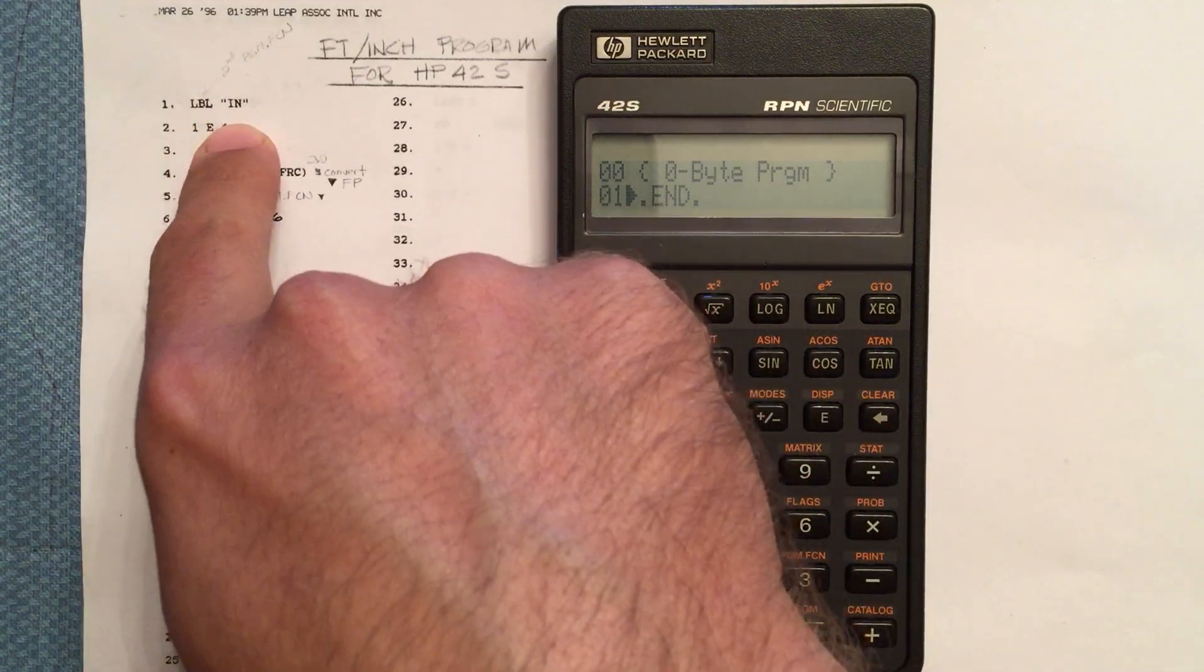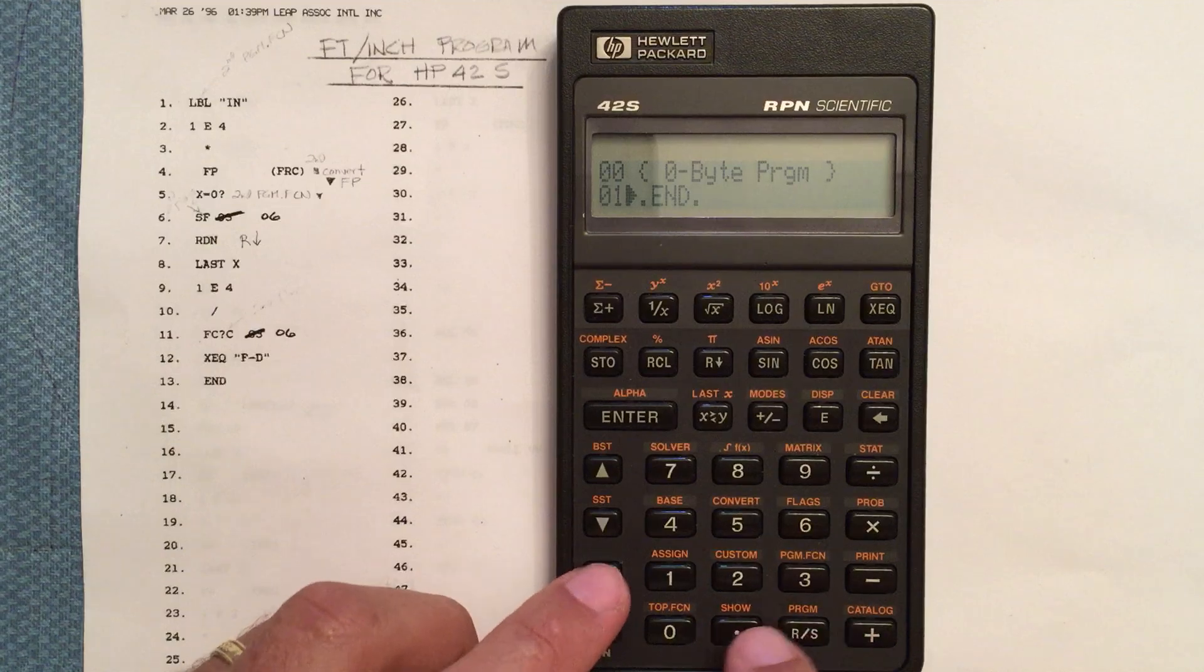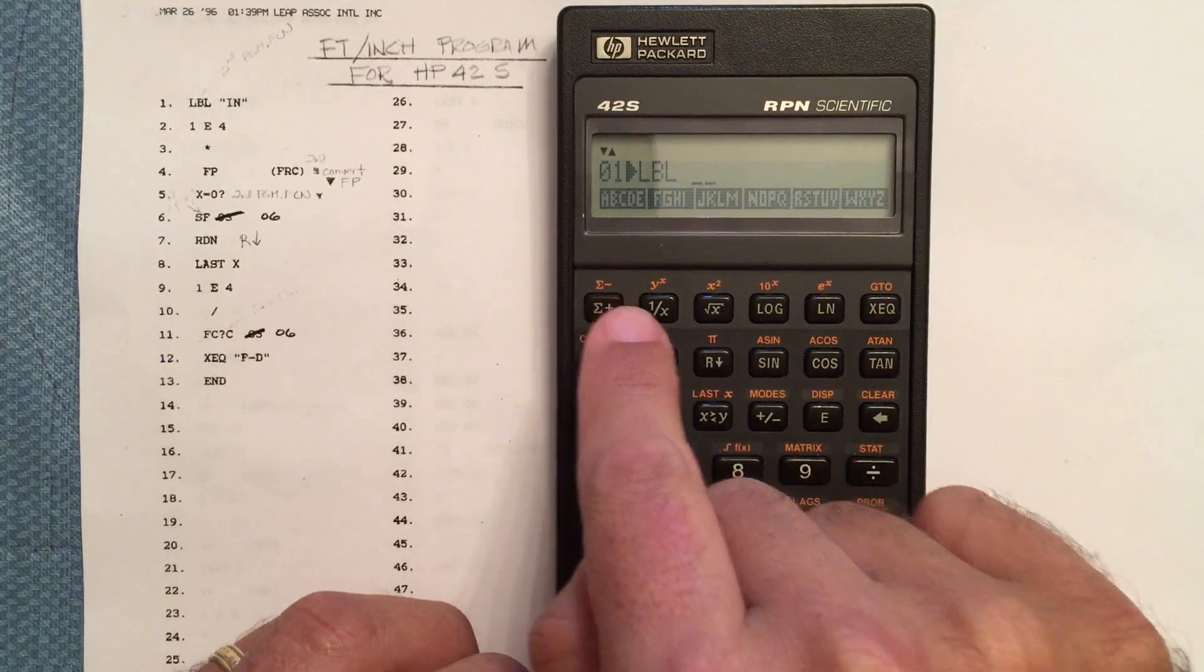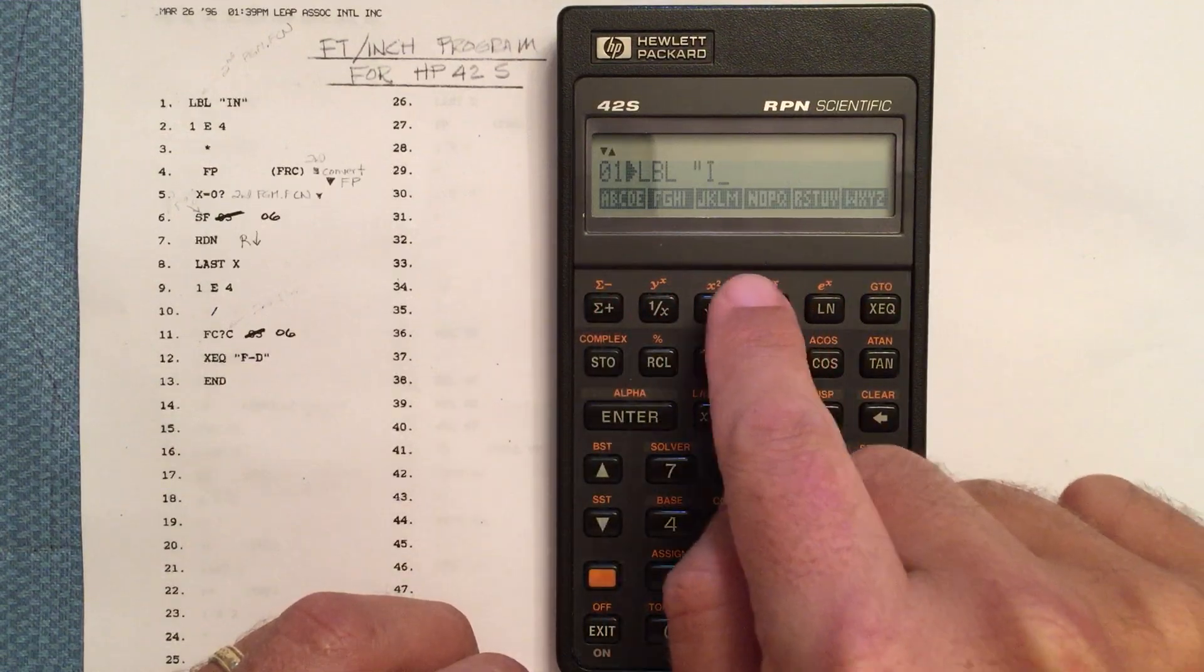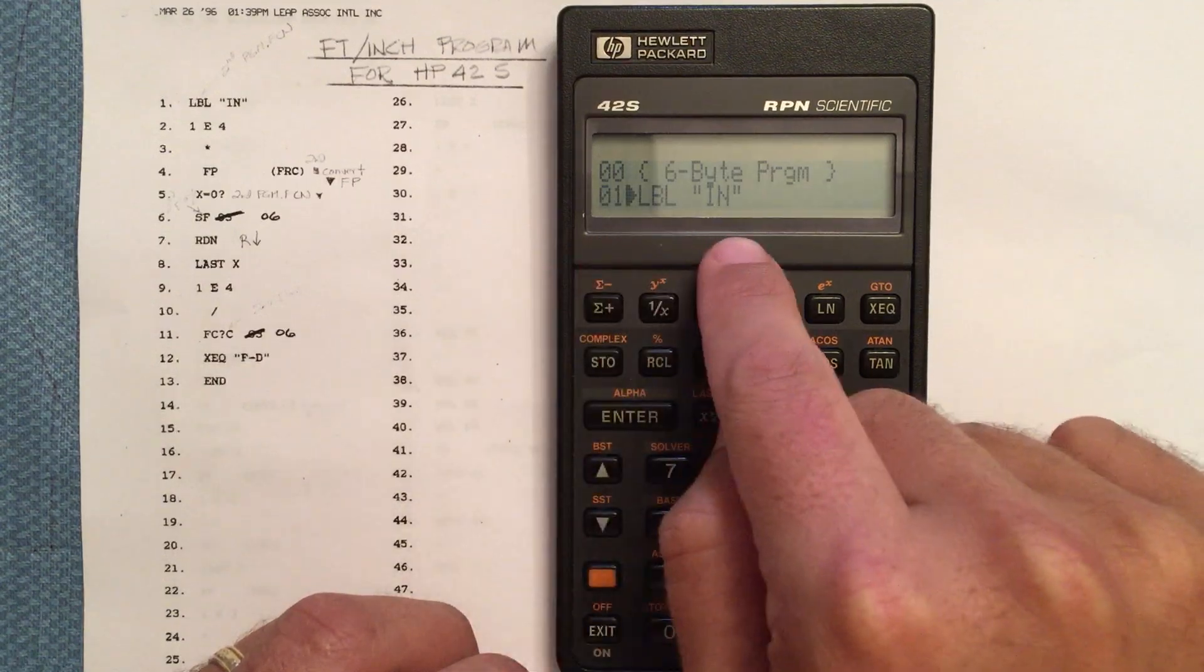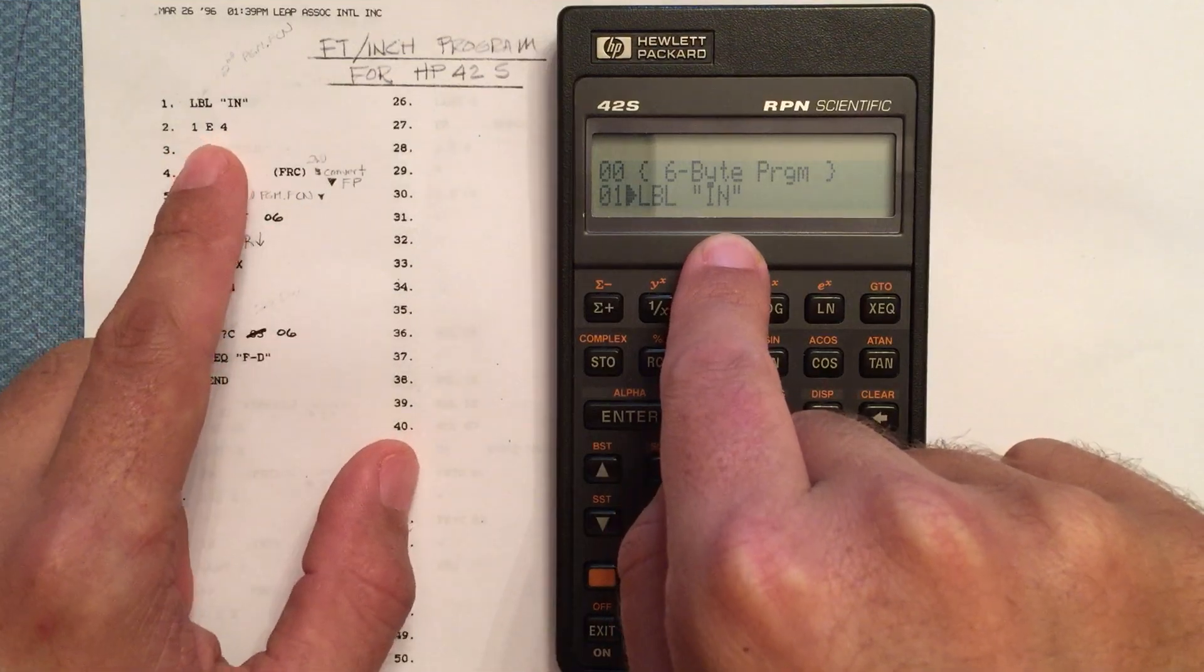So we first want to enter in this label for inch. It's going to be under the program function. So shift, program function, and there's the label. It brings up our alpha menu, and we hit I, and then N, and then enter. There's our first line, 01, label inch, just like the program has here.